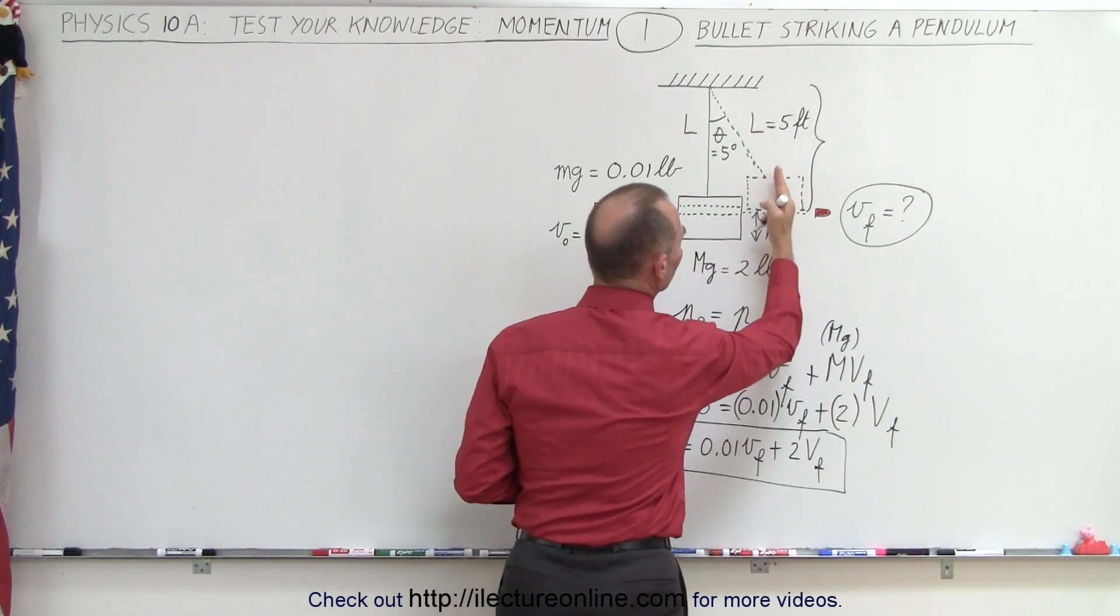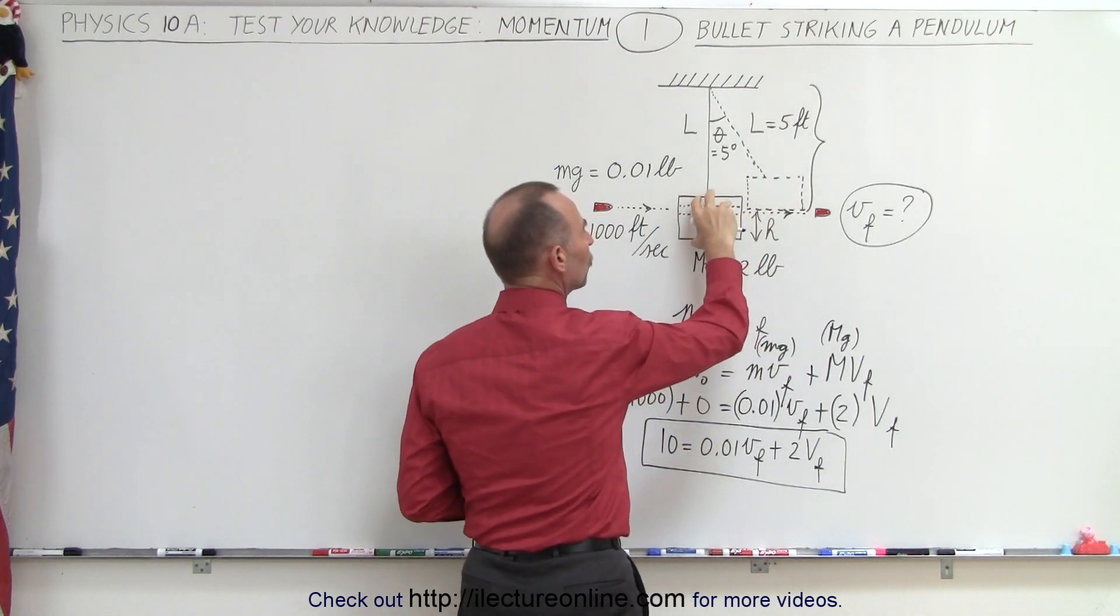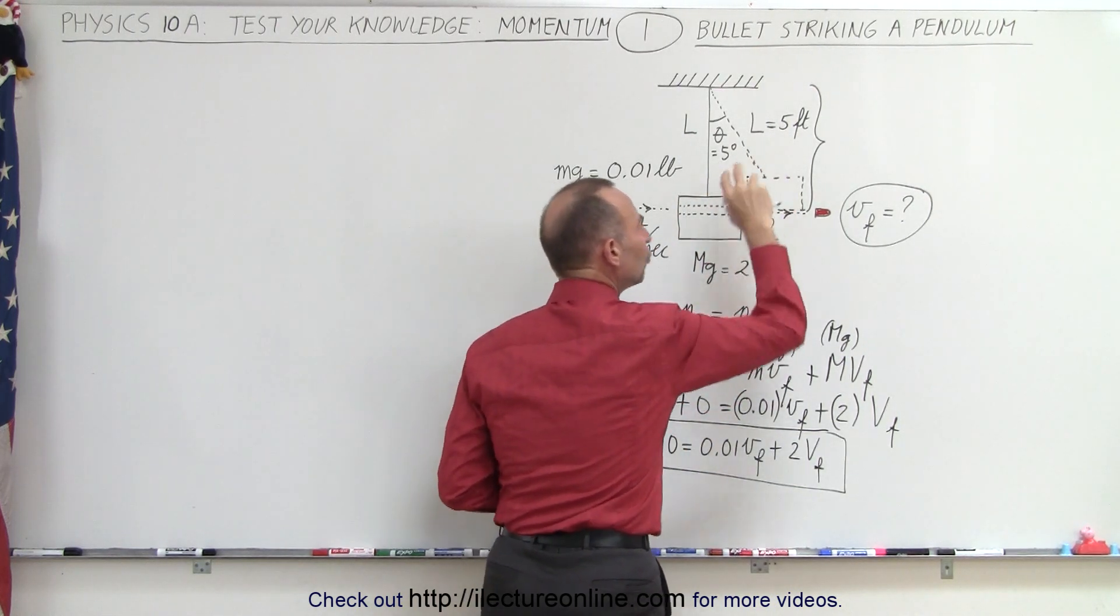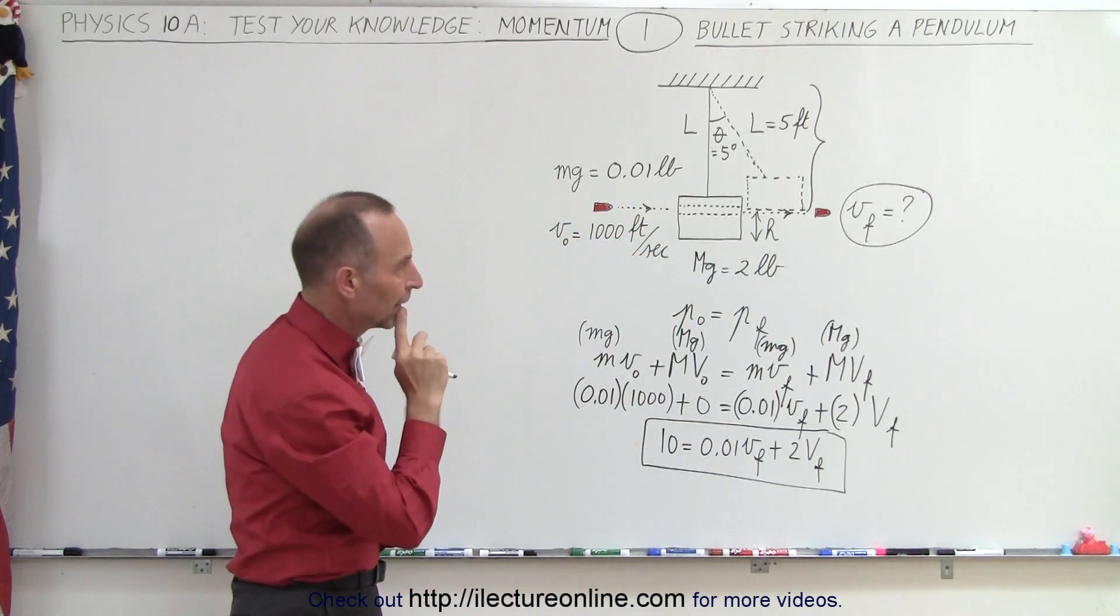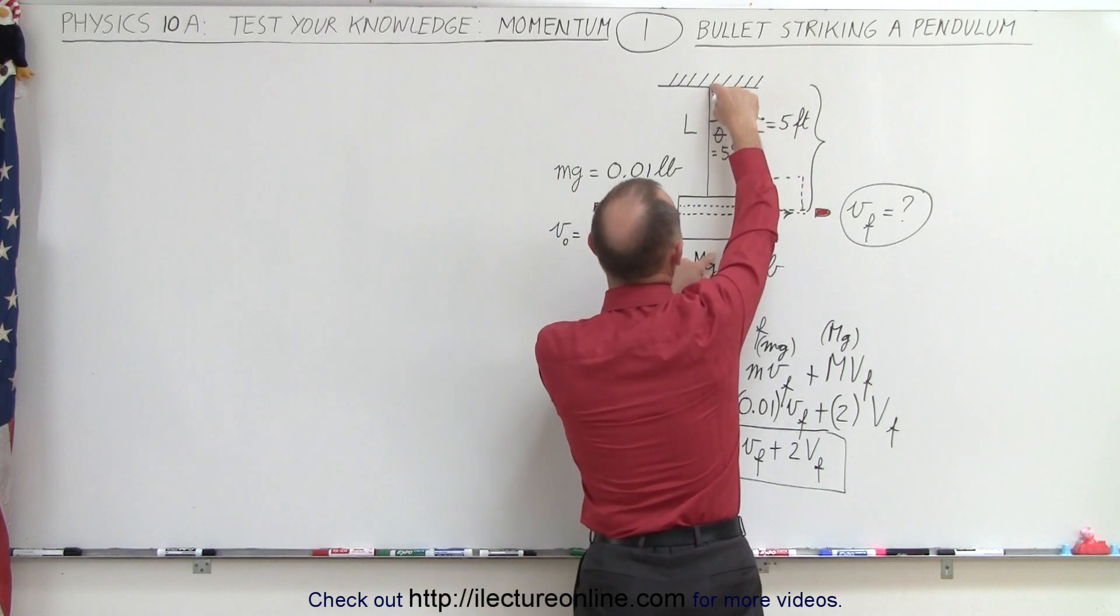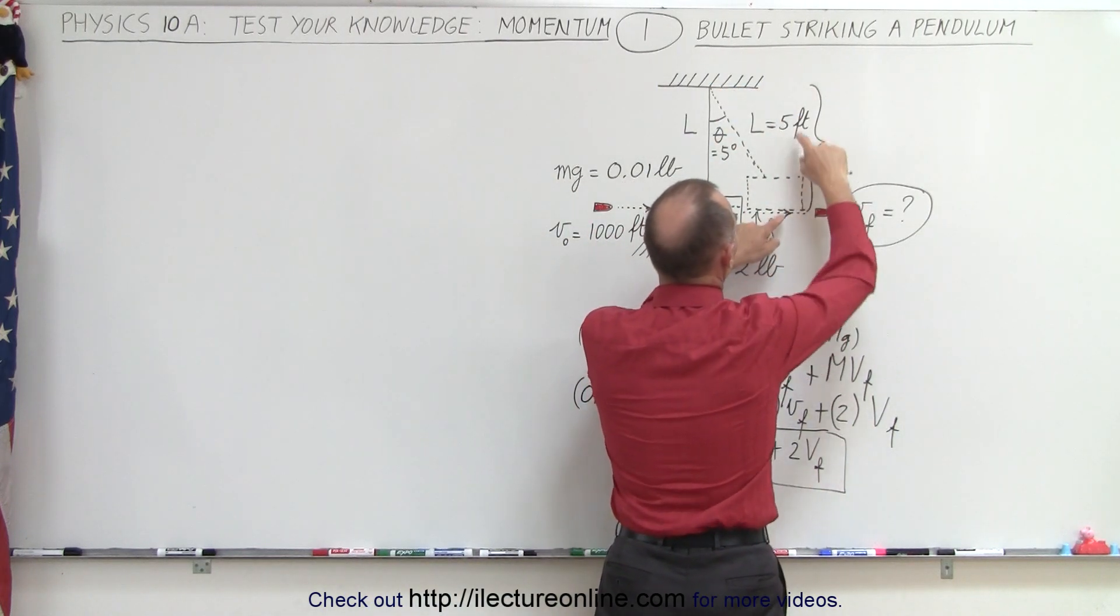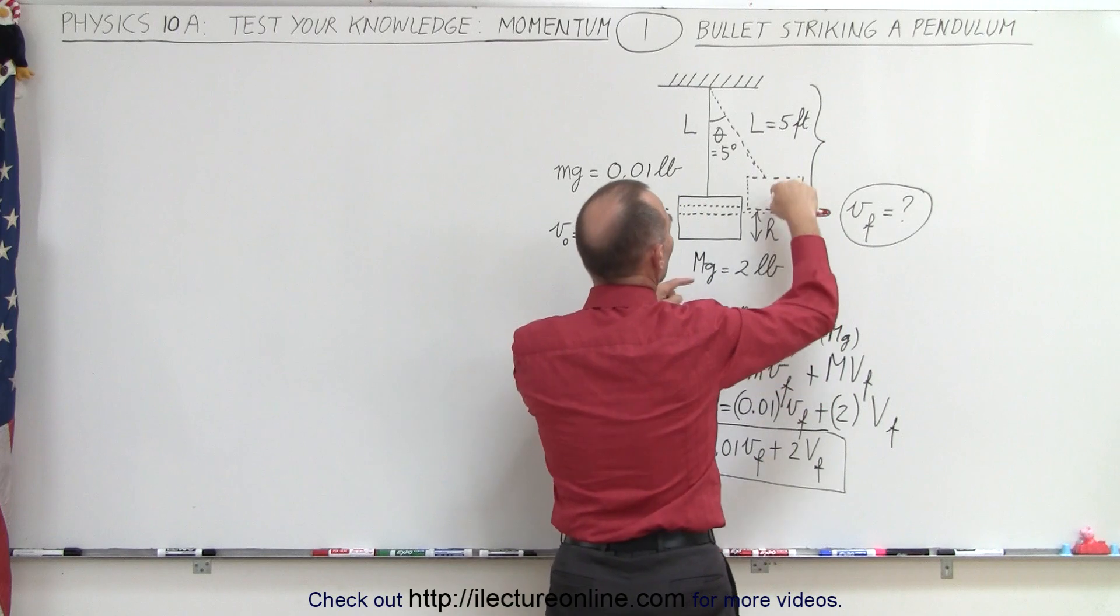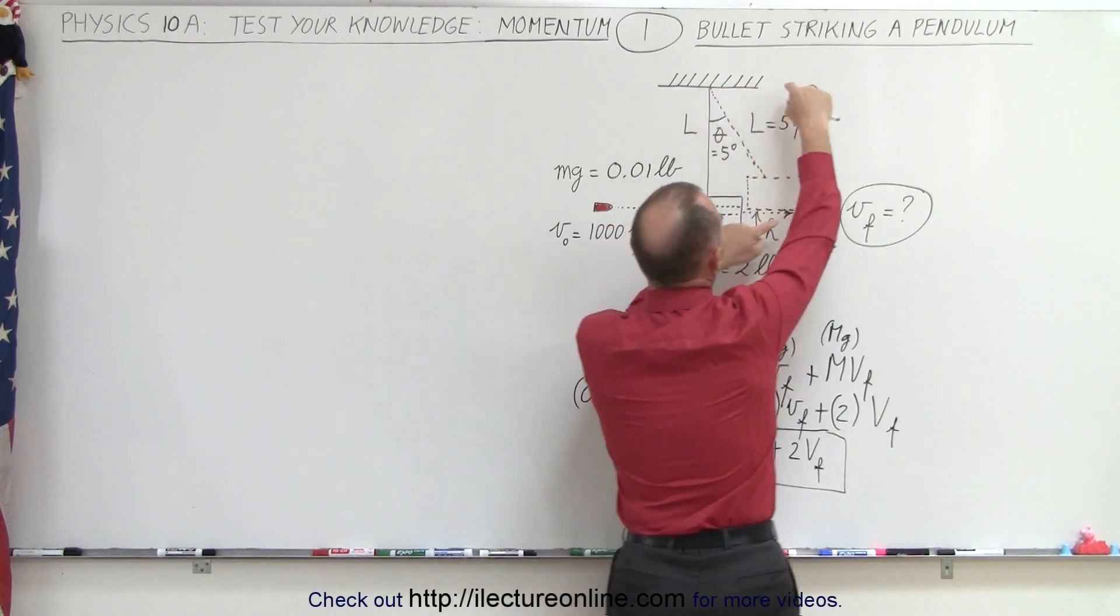Right after the bullet goes through the block, the block will have some initial velocity and then reaches a certain height. It will change all its kinetic energy into potential energy. We need to know the height gain.